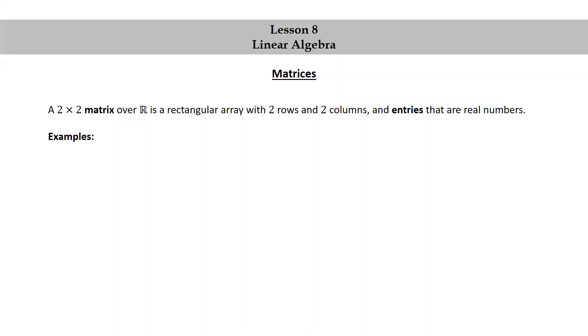Let's look at some examples. Each of the following is a 2x2 matrix over R. The matrix with entries 1, 3, 7, 5.